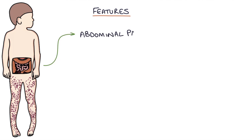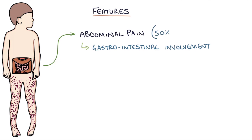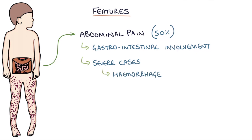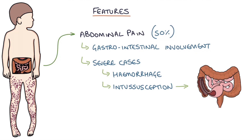Abdominal pain is indicative of gastrointestinal involvement, affecting around 50% of patients with HSP. In severe cases, it can lead to gastrointestinal hemorrhage, intussusception, and bowel infarction.